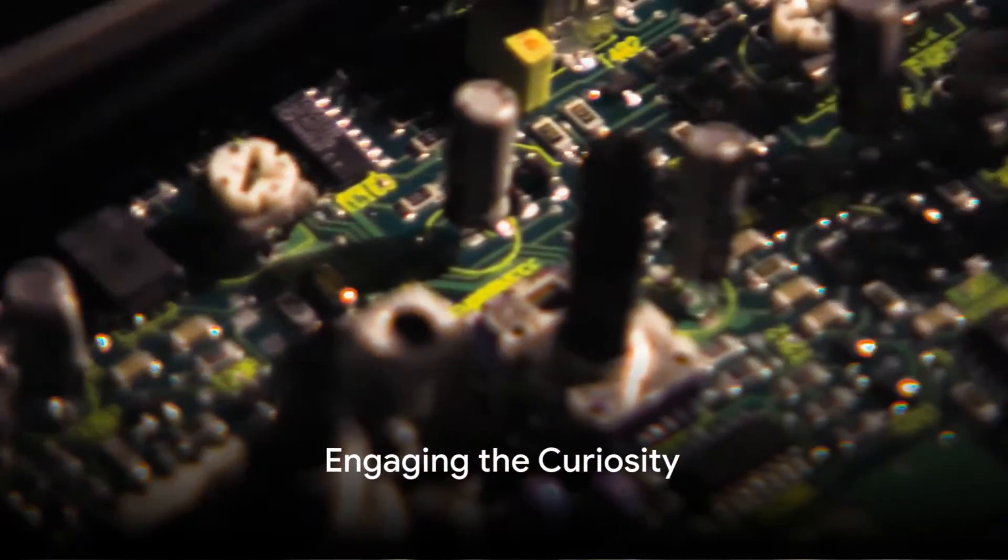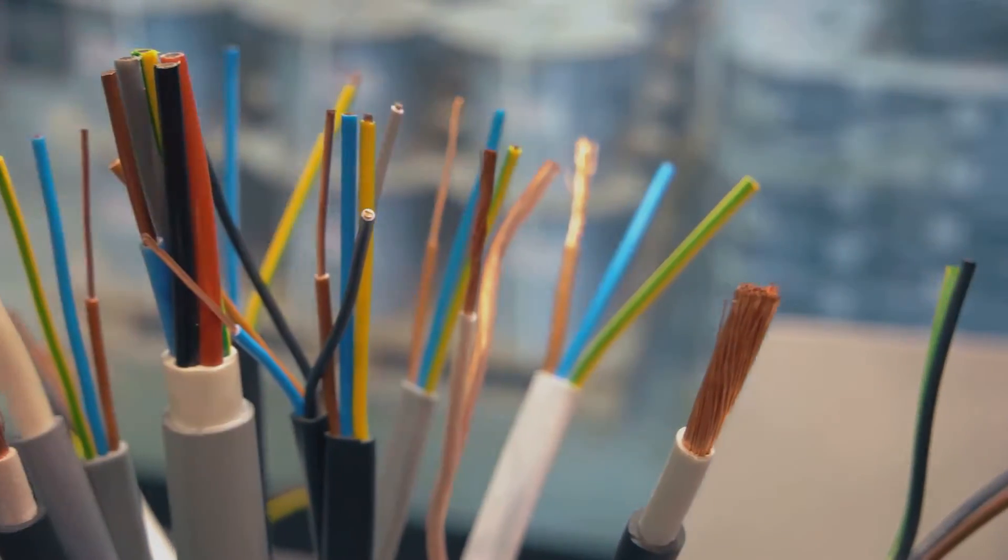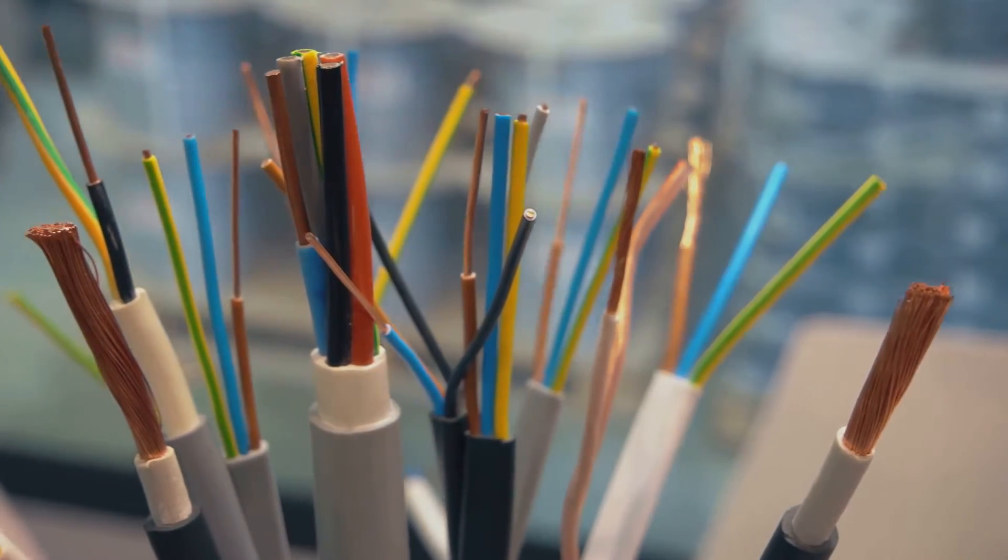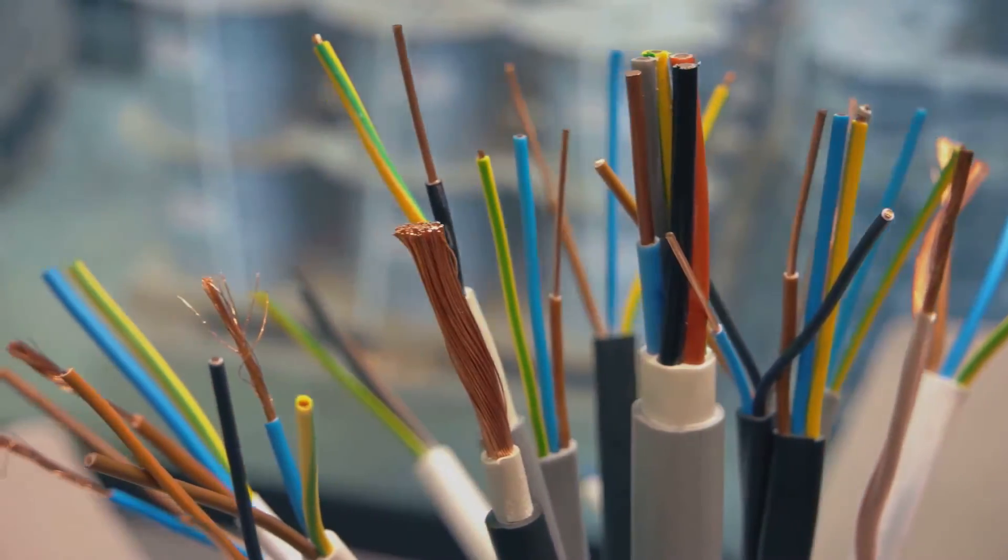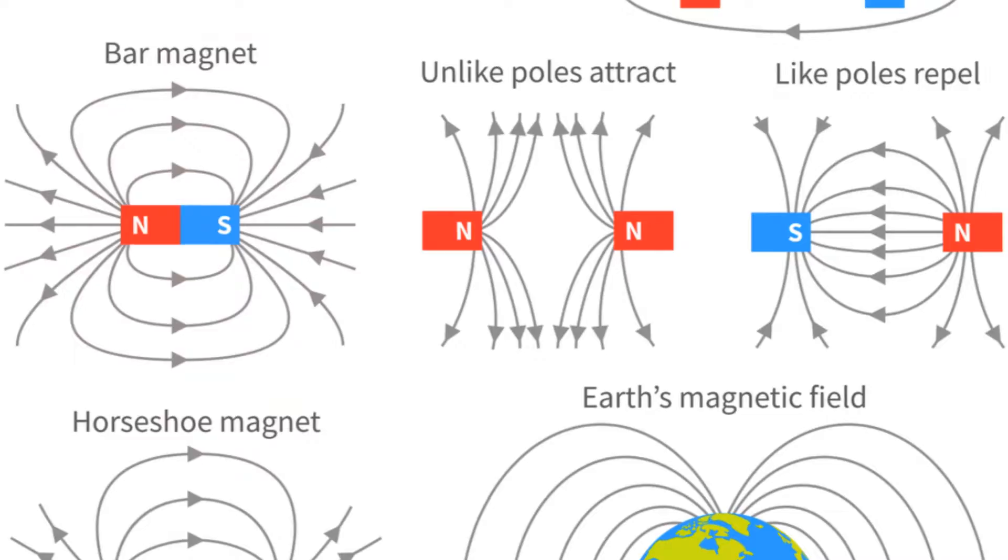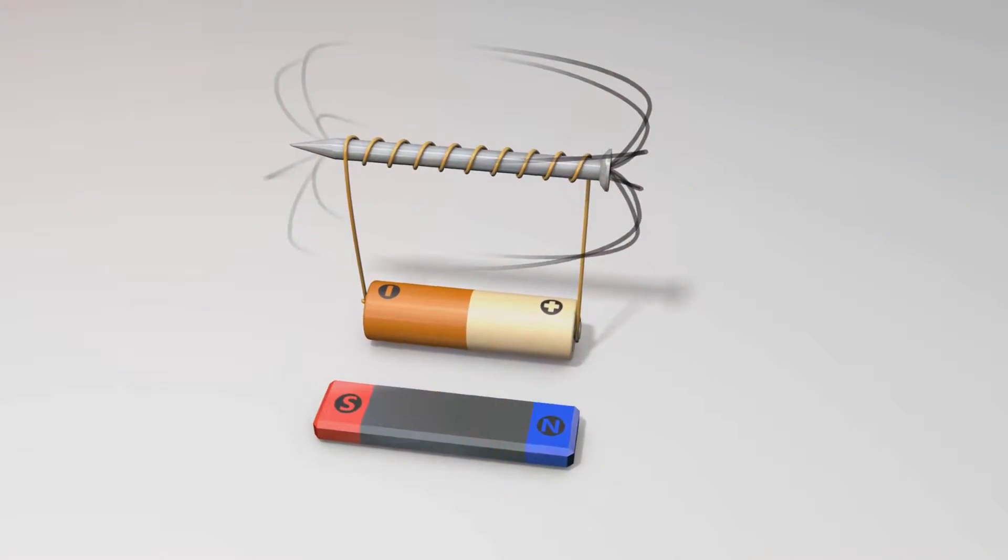Ever wondered how electronic devices detect magnetic fields and convert them into electrical signals? It's a fascinating world we live in, where tiny, invisible forces control so much of our technology. Think about your smartphone, your laptop, even your car. They all have a way to sense and respond to magnetic fields.